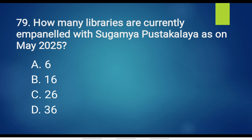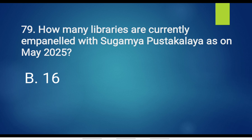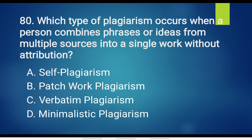Question No. 79. How many libraries are currently empaneled with Sugamya Pustakalaya as of May 2025? Option A. 6. Option B. 16. Option C. 26. Option D. 36. The answer is Option B. 16.